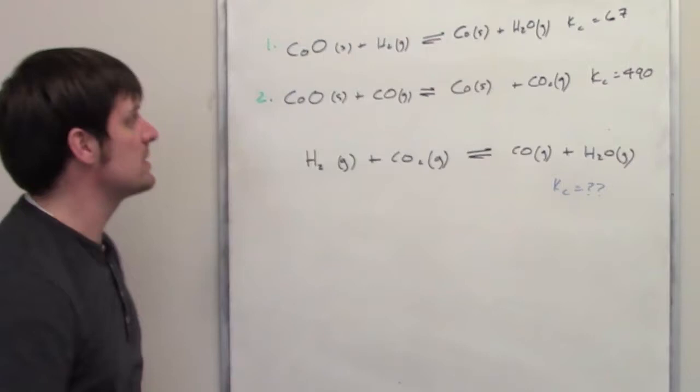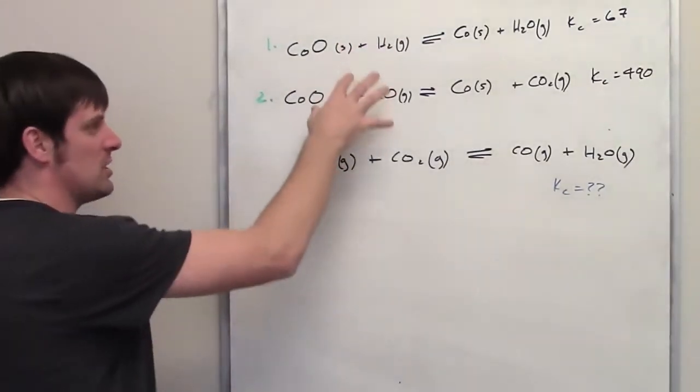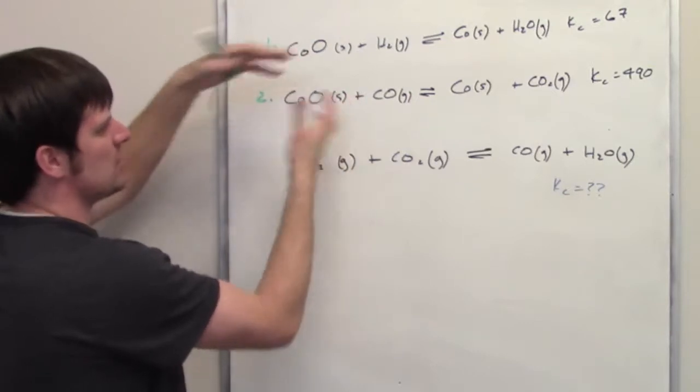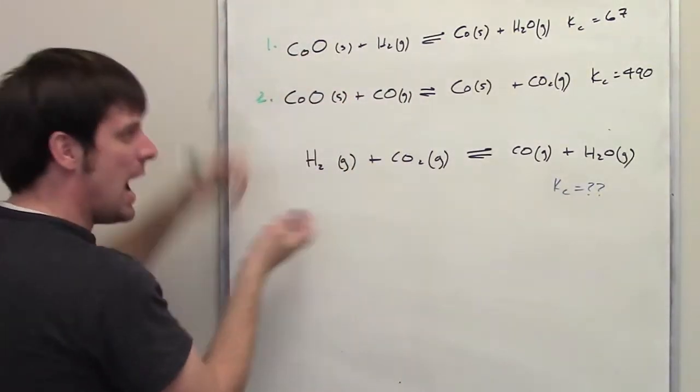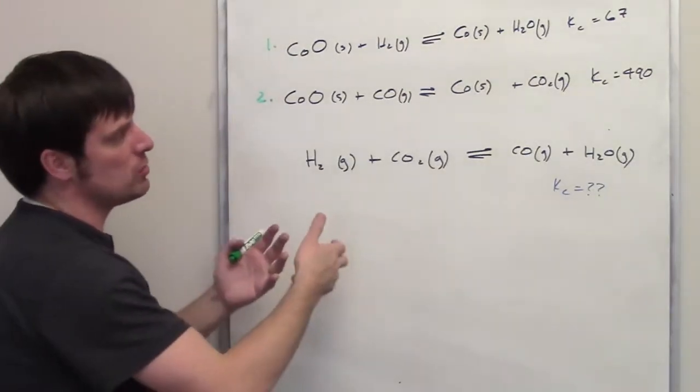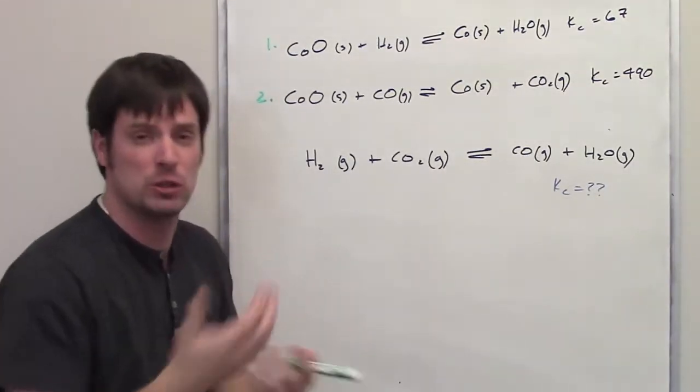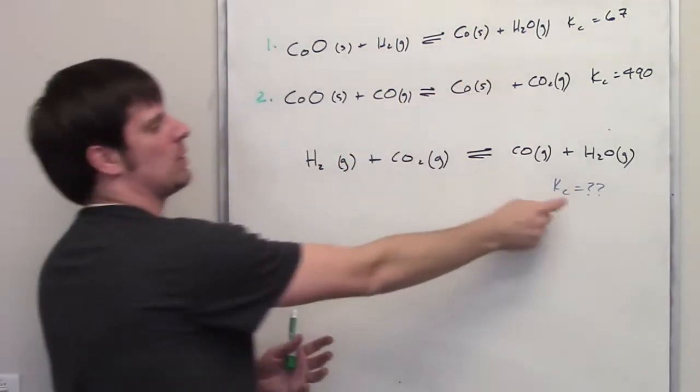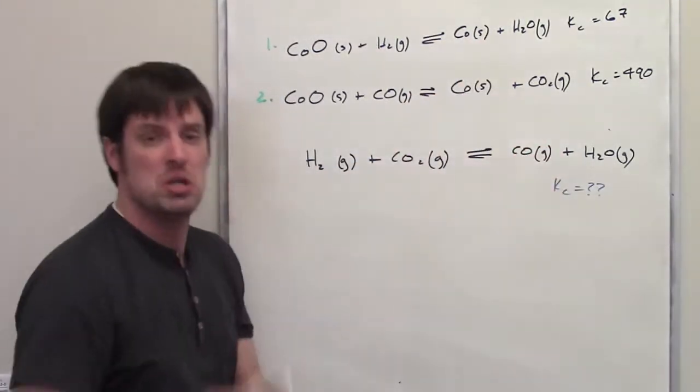Well, similar to what we did in our previous example, we're going to manipulate these two equations in order to have them convert somehow into something where when I add them up, they give me this overall equation down here. And then I can do some algebraic manipulation with their equilibrium expression constants to get the overall equilibrium expression constant for this thing too. Hopefully that makes sense.